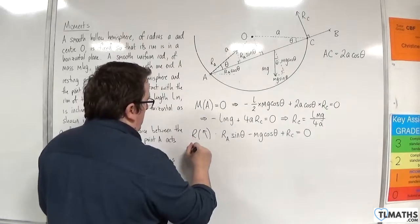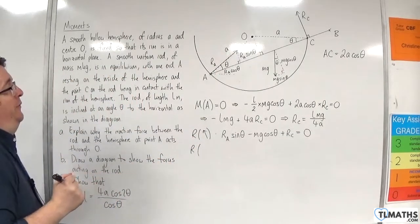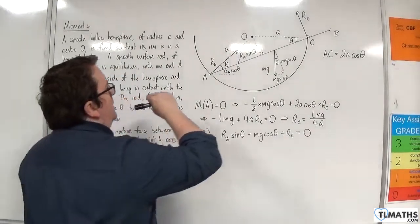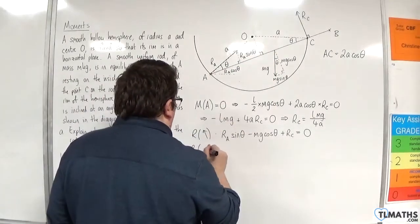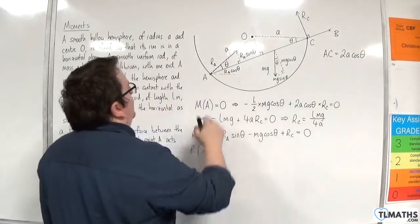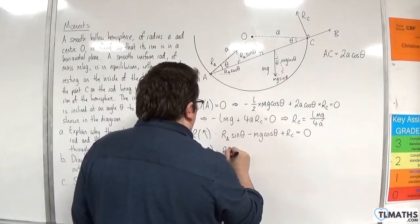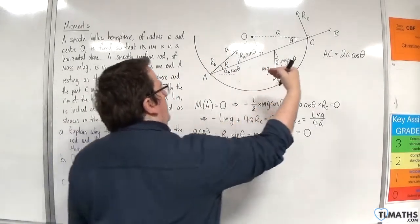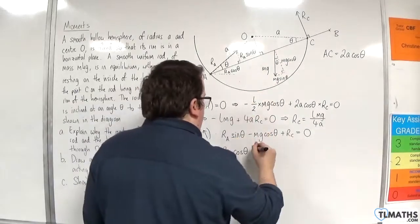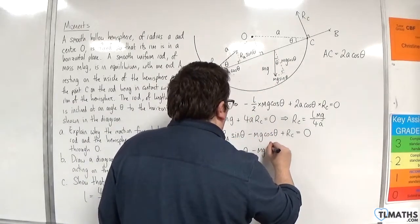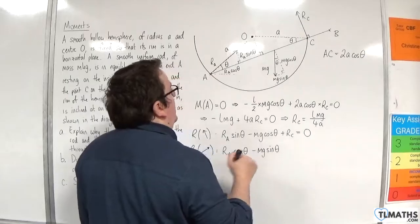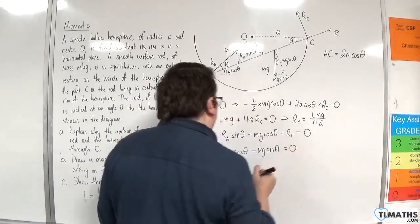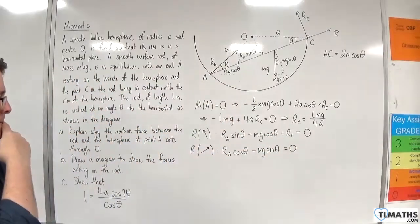Let's now resolve parallel to the slope. And I'm going to take up the slope as positive. So I've got R A cosine theta. I've got take away M G sine theta. And that's it. So it equals 0.